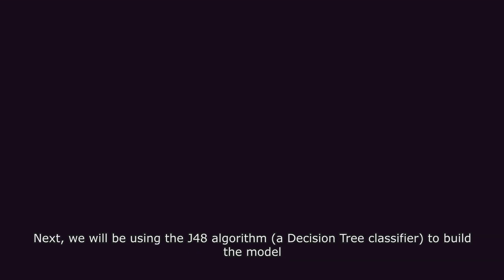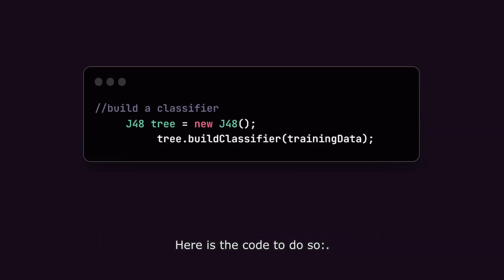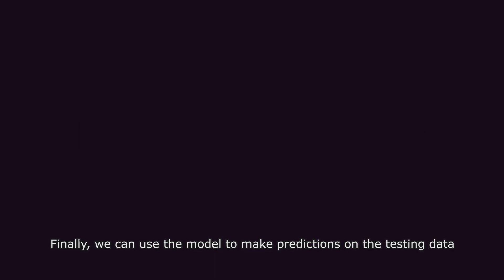Next, we will be using the J48 algorithm, a decision tree classifier, to build the model. Here is the code to do so. Finally, we can use the model to make predictions on the testing data.